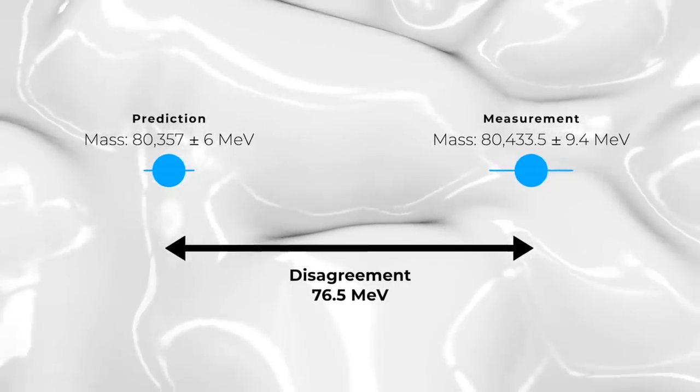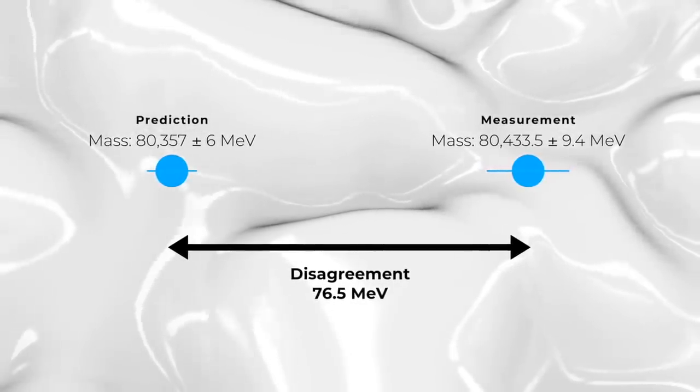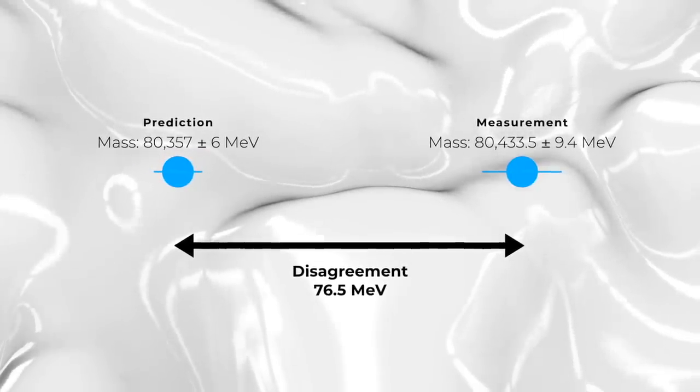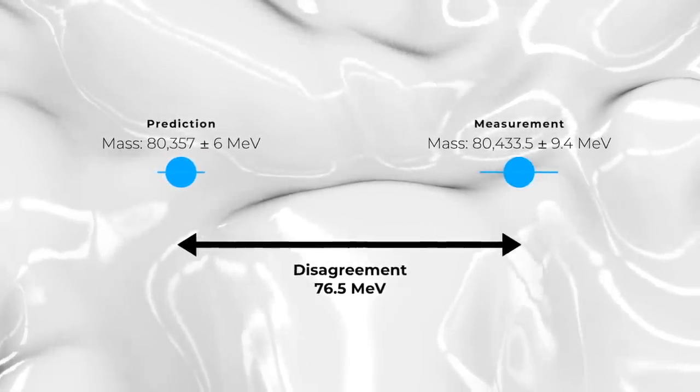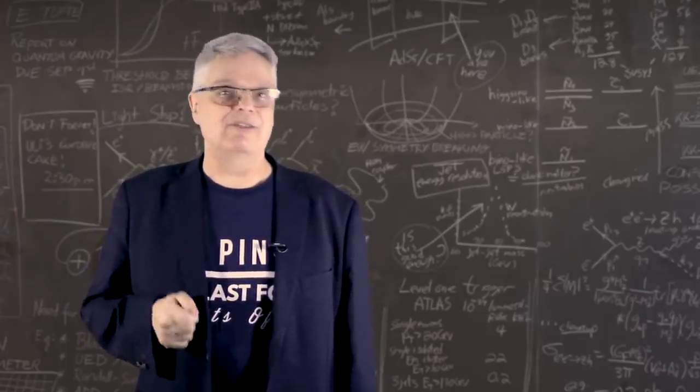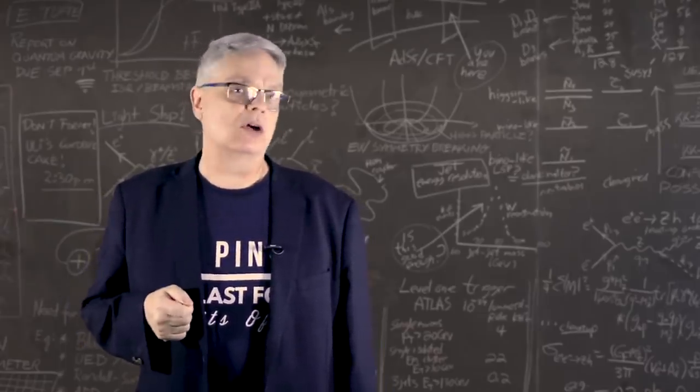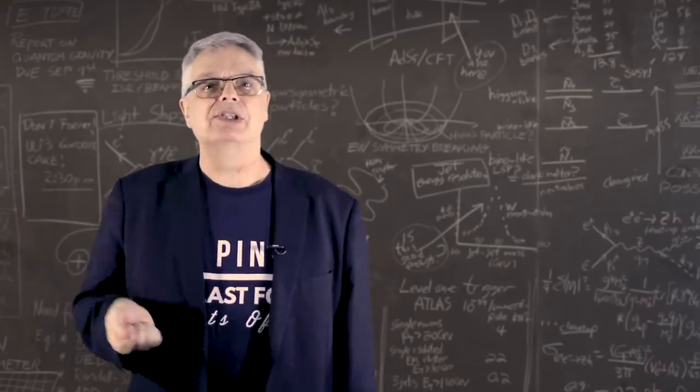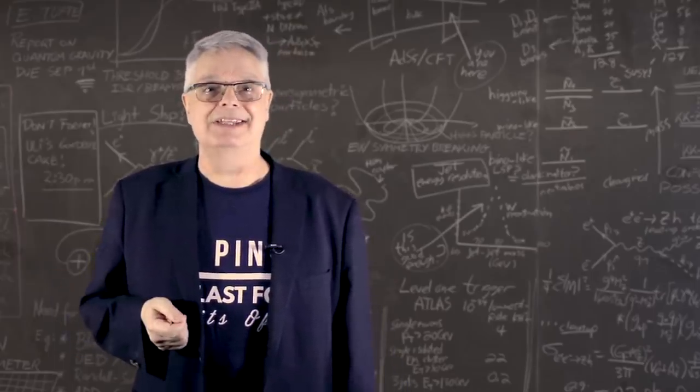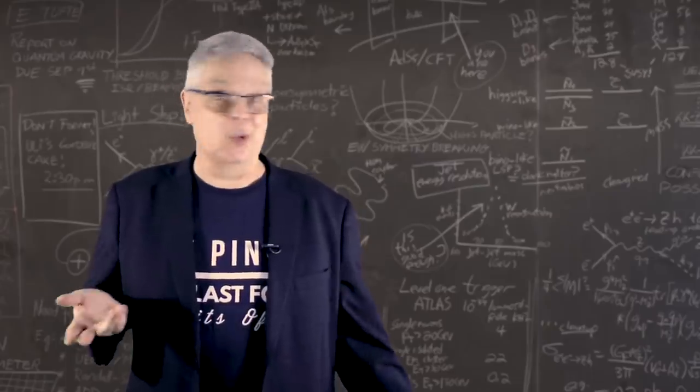What's really exciting is that it disagrees with the theoretical prediction, which is 80,357 ± 6 MeV. For those of you who are fans of statistics, this level of disagreement is seven standard deviations, so-called seven sigma. Since the agreed-upon threshold for discovery is five sigma, this could be a big deal. Has the CDF experiment broken the standard model?